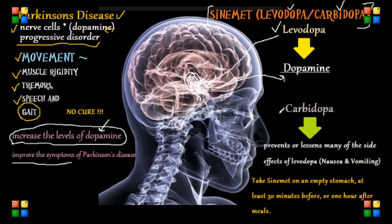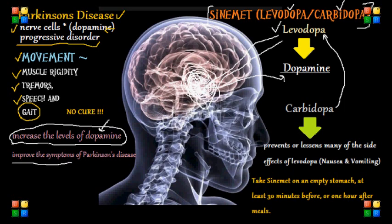Carbidopa has two benefits. First, it aids levodopa in crossing the blood-brain barrier for a greater central nervous system effect. Second, it works by preventing levodopa from being broken down before it reaches the brain, which causes less nausea and vomiting — a common side effect patients experience with levodopa.